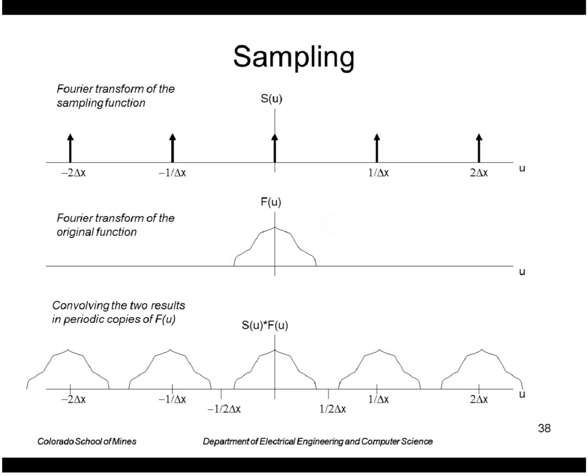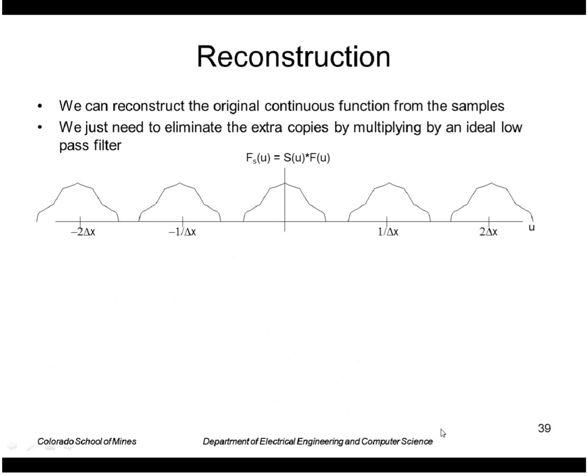You can think of also as just sliding this function past all these impulses and you just get back the function itself. This is what we have effectively after we have a bunch of samples of our image.